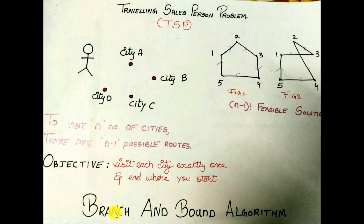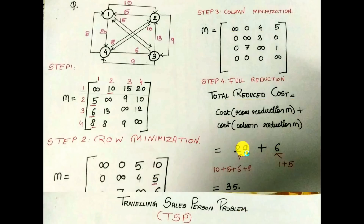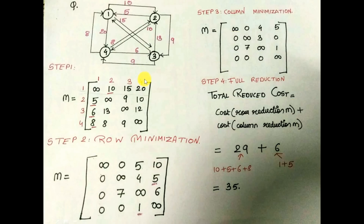TSP is usually implemented using the branch and bound algorithm, and the reason behind this is that it provides an exact solution to the problem. We have other algorithms like heuristic algorithms, but the problem with those is that they are fast but do not provide an exact solution.